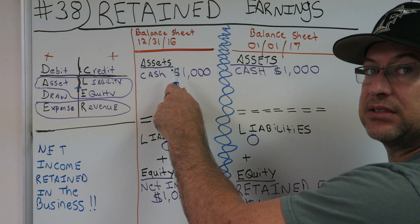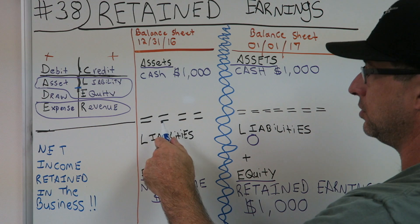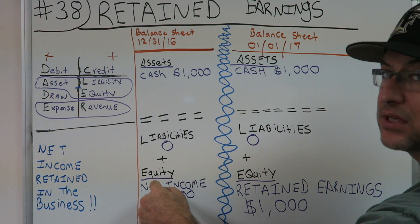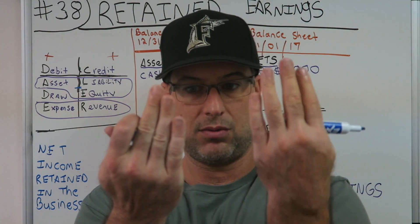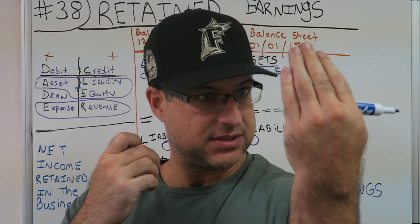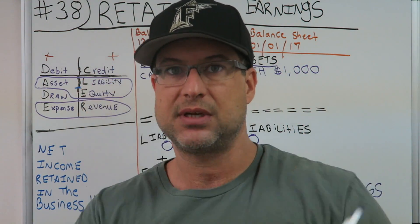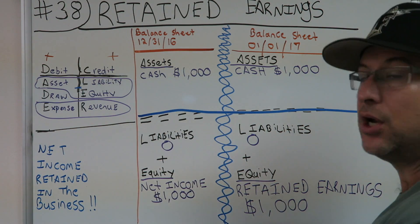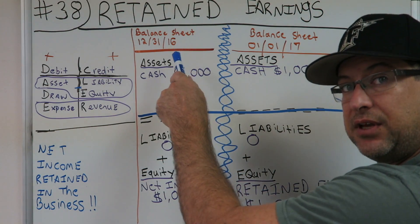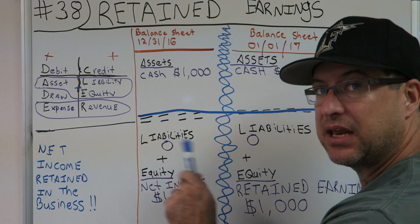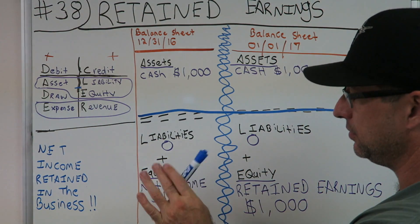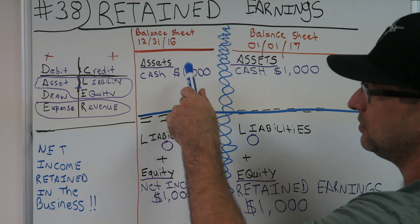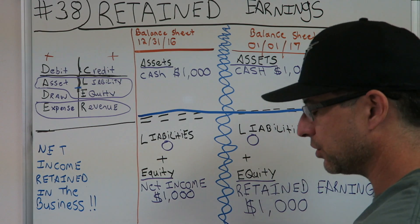On the 12/31/16 balance sheet, we have cash of one thousand dollars as our asset. We don't have any liabilities. The only equity we have is net income of one thousand dollars. So assets equal one thousand, liabilities plus equity equal one thousand — we're good. That's the last day of the year.